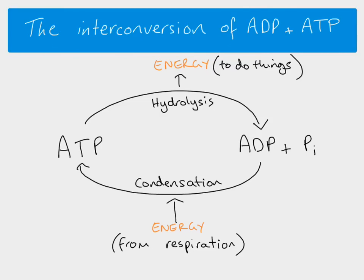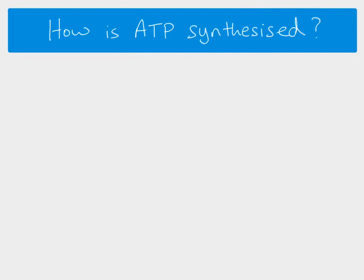Although we know that respiration releases energy, it actually needs an input of energy to start with — you need a little bit of energy input to be able to get a large energy output. We know that ATP is synthesized from ADP and Pi, but we need to know how that actually happens. There are two main ways.